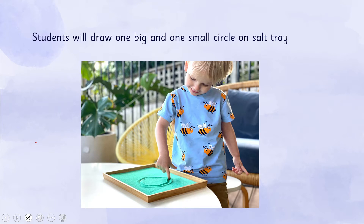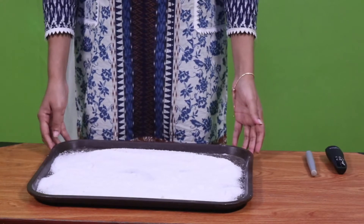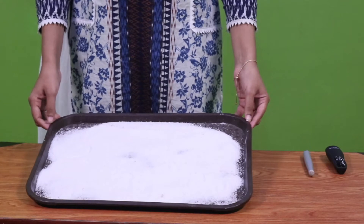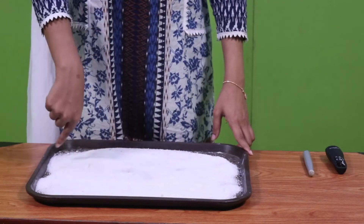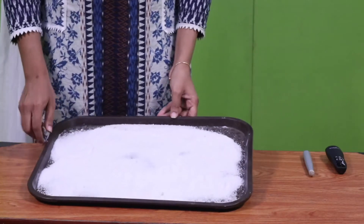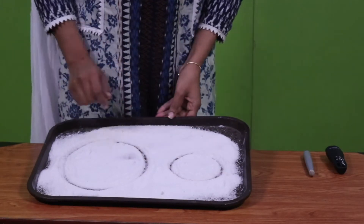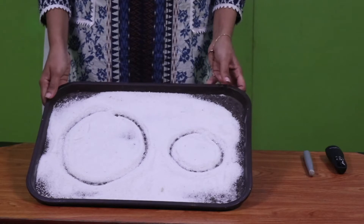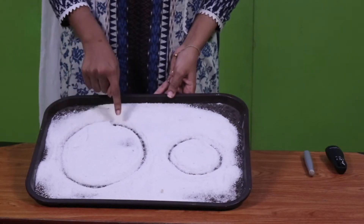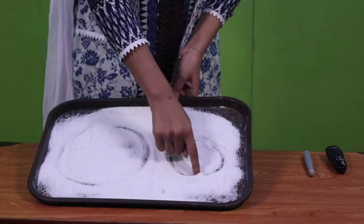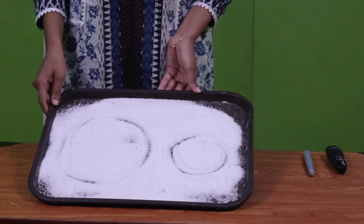Hopefully you have your salt trays now because I have mine. What we are going to do is make a big circle and a small circle on the tray. All groups should have a tray. Let's make it — a big circle and a small circle. This one is the big circle and this one is the small circle, just like when we learned about the circle shape. Pause your video here and give everybody a chance to make his or her own circle.